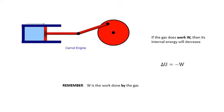Another way the internal energy can change is if the gas does work — if the gas does work, its internal energy will decrease. A gas does work when it expands: in a cylinder with a piston, the gas pushes the piston outwards. So delta U equals minus W, or W equals minus delta U. Here W is work done by the gas. You can also do work on a gas by pushing the piston in, but for W to be positive it represents work done by the gas.